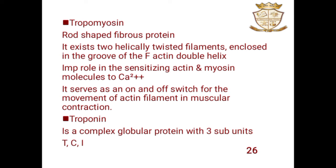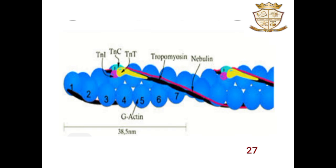Another actin binding protein is tropomyosin, a rod-shaped fibrous protein. It consists of two helically twisted filaments enclosed in the groove of the actin double helix. It plays an important role in sensitizing actin-myosin molecules to calcium (Ca2+) and serves as an on-and-off switch for the movement of actin filaments in muscular contraction. Troponin is a complex globular protein differentiated into three subunits: TnI, TnC, and TnT.